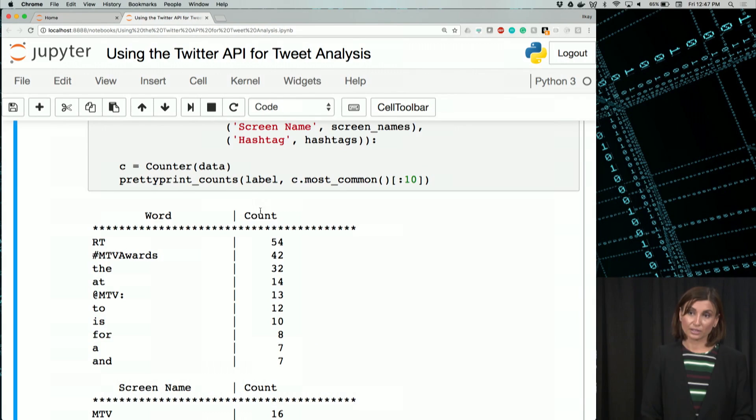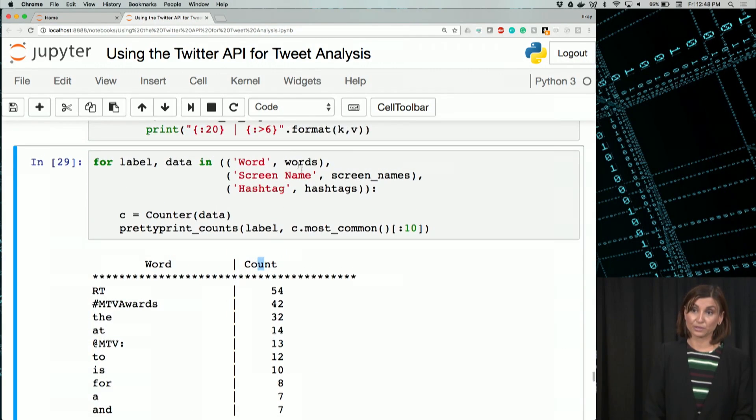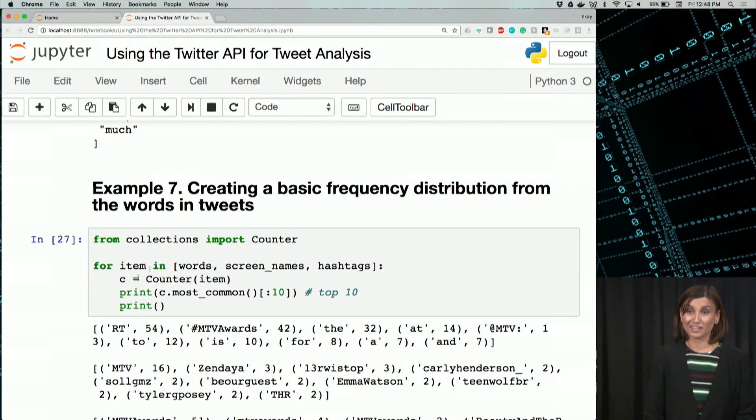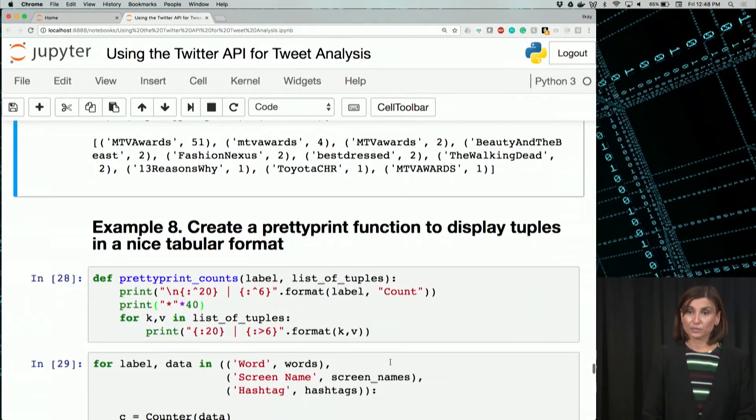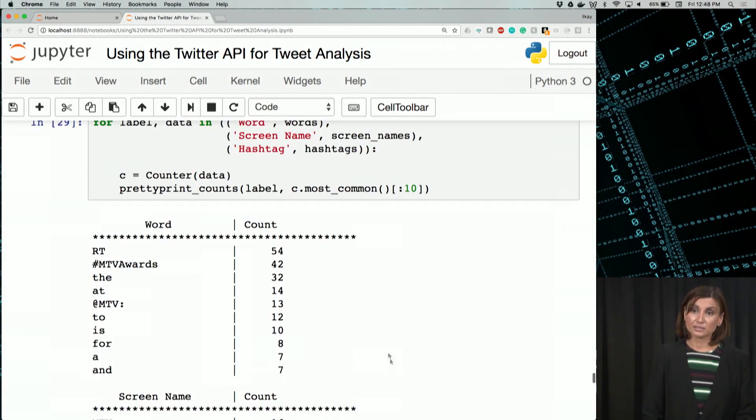We definitely have our word and count. This was our first one, the words one, that was printed like this before. In this case, we are formatting it for the word and how many times it happened, in a tabular form.